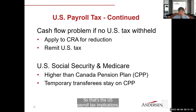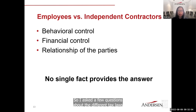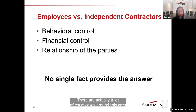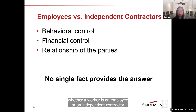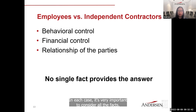Now let's talk about distinguishing between employees and independent contractors. There are many court cases in this area, and relevant facts fall into three main categories: behavioral control, financial control, and relationship of the parties. In each case it is very important to consider all the facts — there is no single fact that provides the answer.